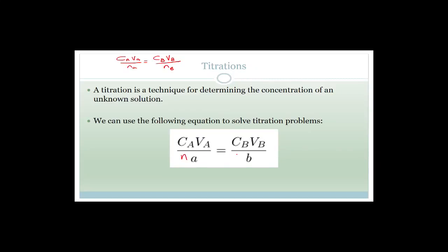It's exactly the same, except there's an N in front. What the N stands for is the number of moles. All they've done is used your concentration formula. We know that concentration equals number of moles over volume, because it's measured in moles per decimetre cubed. So they've said we can express a ratio of the number of moles of acid to the number of moles of base, giving us C_A V_A over N_A equals C_B V_B over N_B.